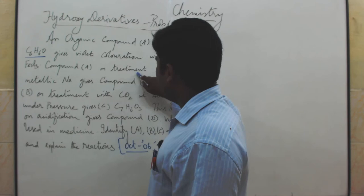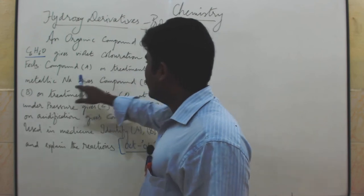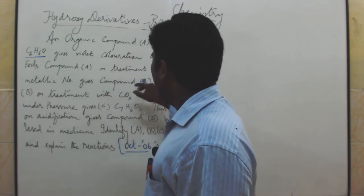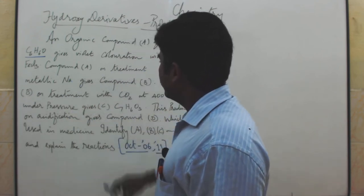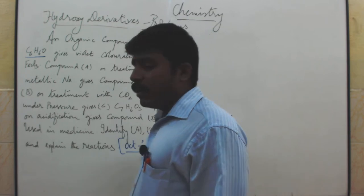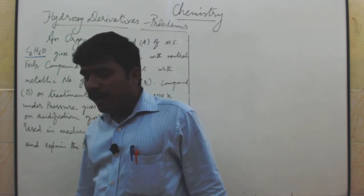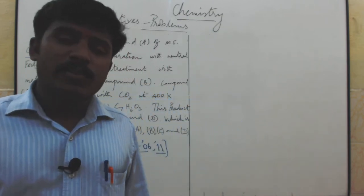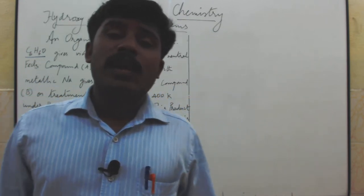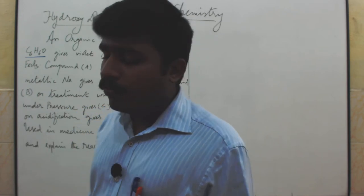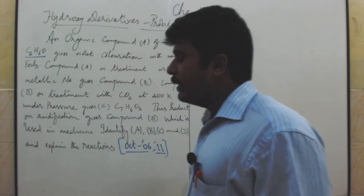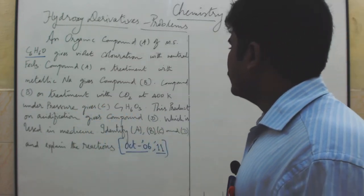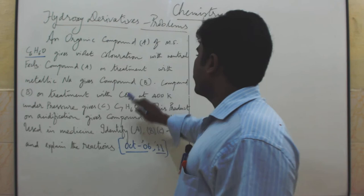On treatment with metallic sodium, compound A gives compound B. Compound A is phenol, and phenol reacts with metallic sodium to give sodium phenoxide, which is compound B.